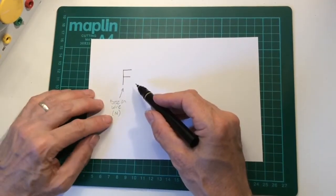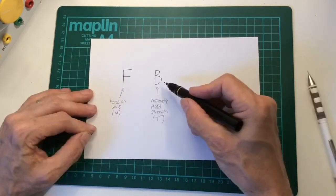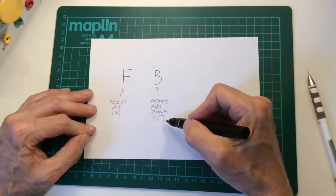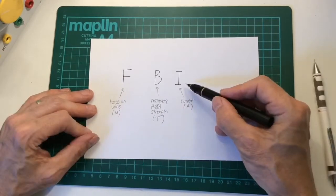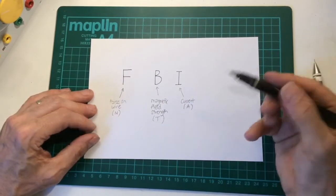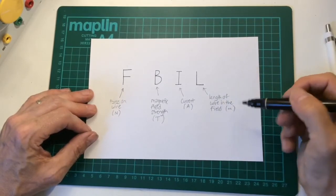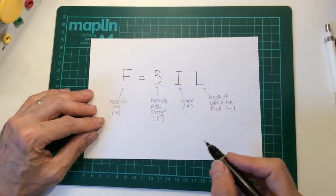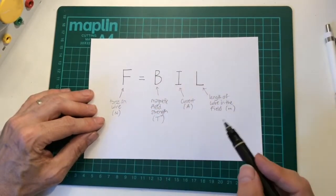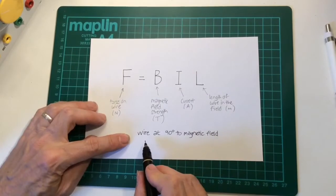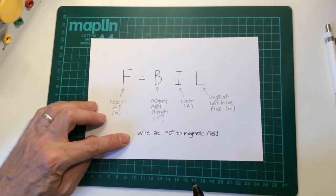The size of the force on the wire measured in Newtons depends on the magnetic field strength which is labelled B and is measured in Tesla capital T, the current in the wire measured in amps, and the length of the wire in the field measured in metres. And it turns out that the equation to calculate the force is as simple as that. F equals B times I times L, as long as the wire is at 90 degrees to the magnetic field.